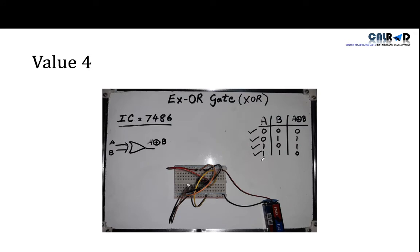Now we will put both inputs on 1. This is orange and this is black. We put both on the positive terminal, and according to the table the output is 0, so our LED is also not blinking. So hence proof that 7486 IC is used for XOR gate applications.